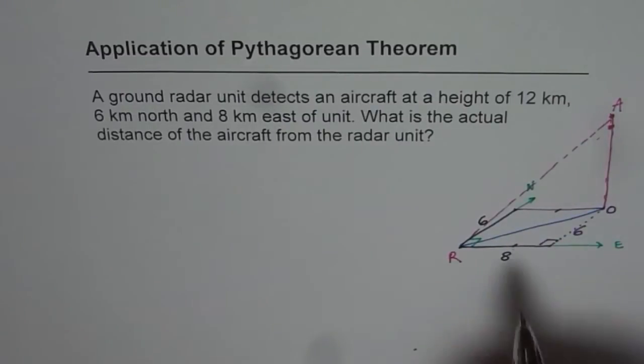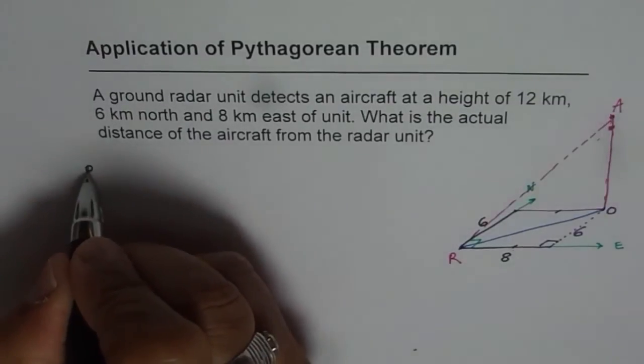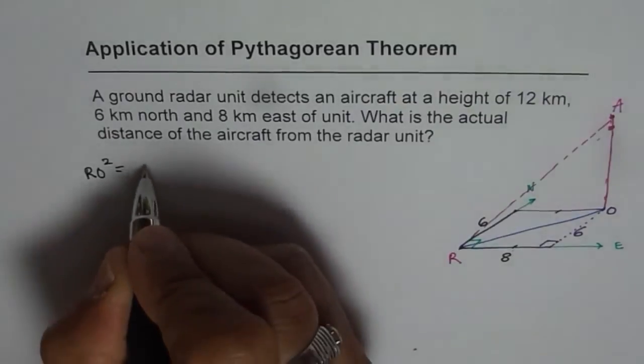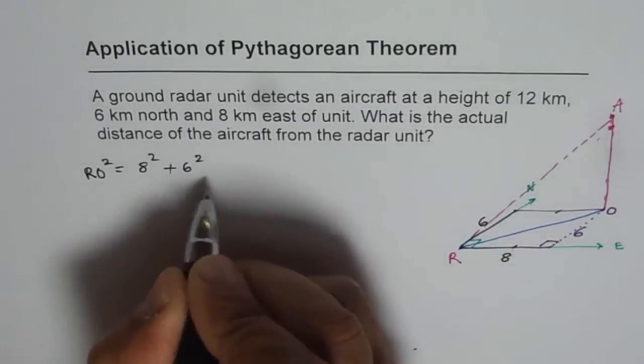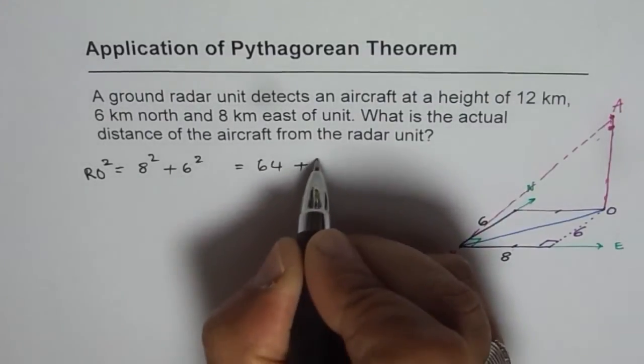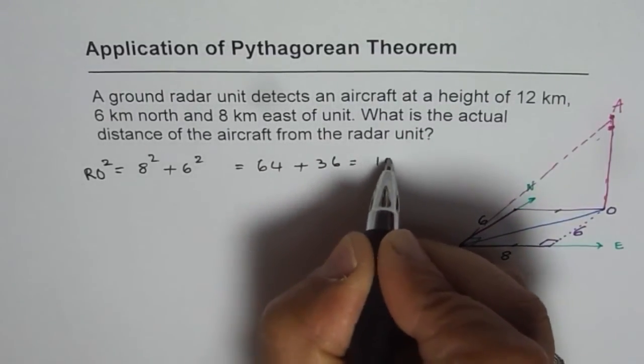Now here we know that is a right triangle with side lengths of 8 and 6. Now with that we can find, let us say this point is O, RO. Using Pythagorean theorem, we will get RO square is equal to 8 square plus 6 square.